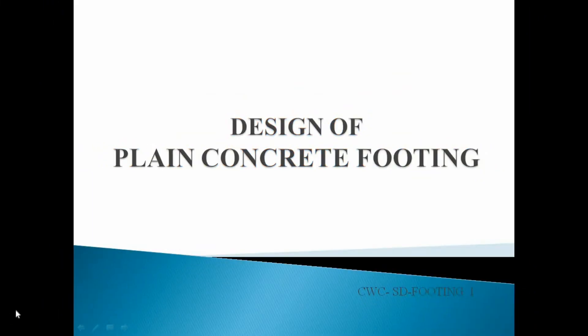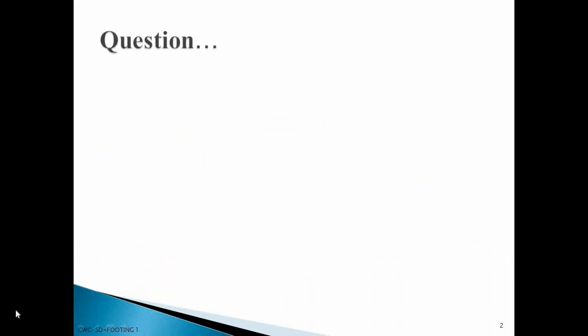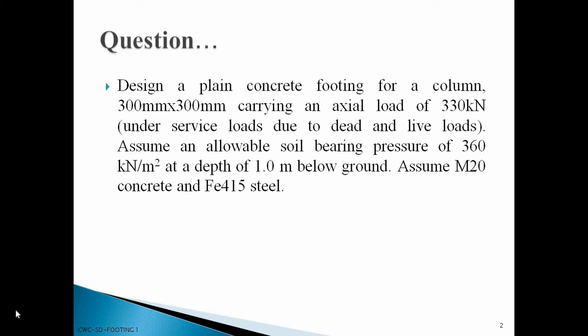Design of plain concrete footing. Here is a question: design a plain concrete footing for a column 300 mm by 300 mm carrying an axial load of 330 kN. Assume allowable soil bearing pressure of 360 kN per m² at a depth of 1 m below ground. Assume M20 concrete and Fe415 steel.